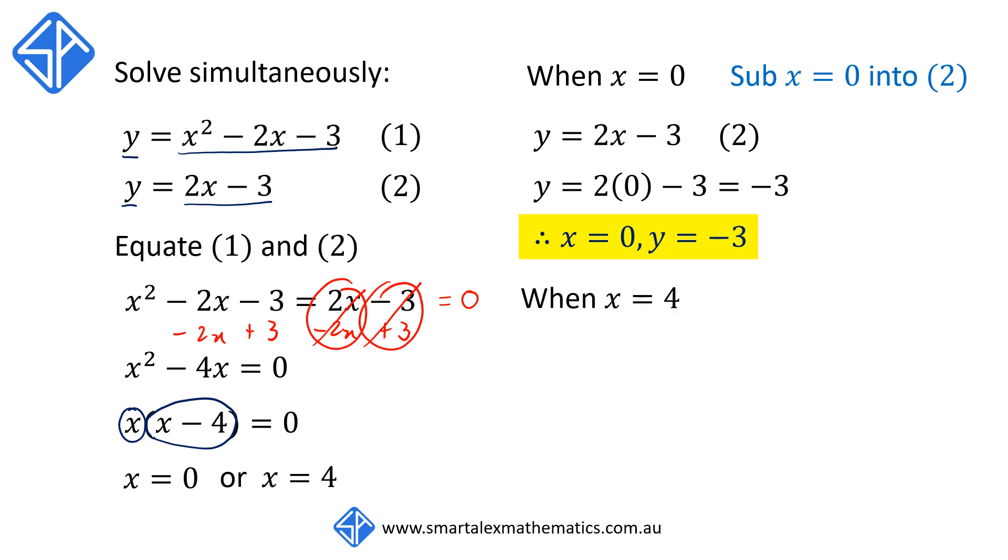When x equals 4, we're going to do the same thing. We're going to sub x equals 4 into equation 2 as well, just because it's a simple equation. So we've got y equals 2x minus 3, our second equation. When we sub in x equals 4, we're going to get y equals 2 times 4 minus 3. And this evaluates to 5. So this means that when x equals 4, y equals 5.